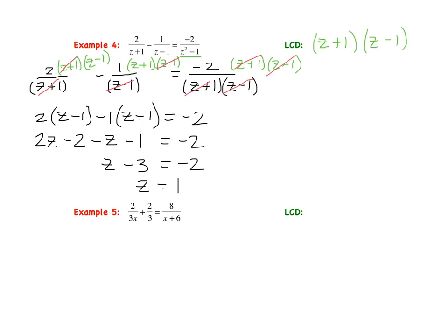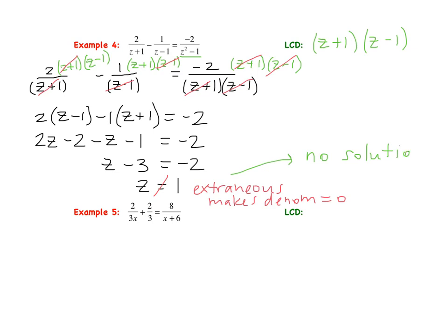The last thing we have to do is check whether z equals 1 makes any denominator 0. When we plug z equals 1 into the second or third denominator, z minus 1 equals 0. Therefore this is an extraneous solution — it makes the denominator equal 0. So the answer is no solution, and you need to make sure you state that.